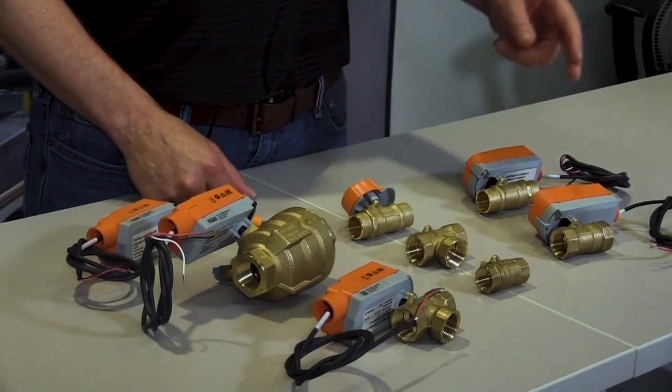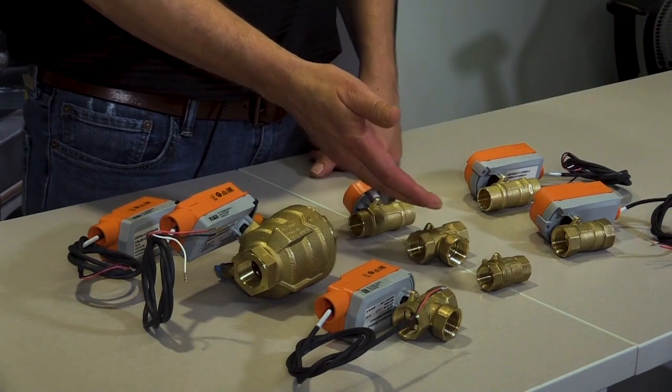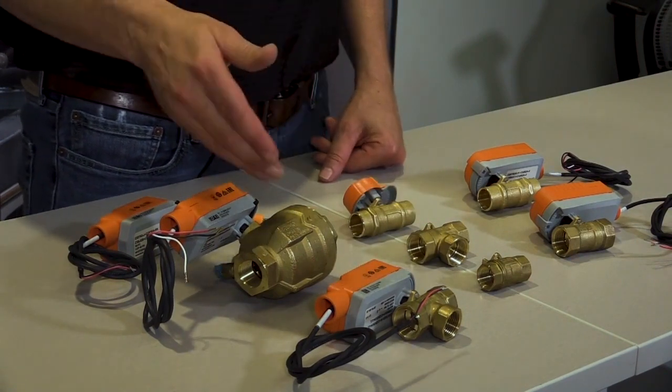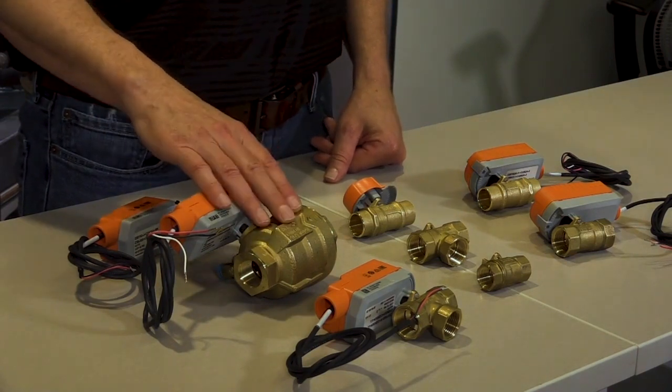I've got a couple samples here. I've got a three-quarter inch sweat, a three-quarter inch NPT, a three-quarter inch three-way valve, and the Belimo PI-QCV which is the same actuator but in a pressure-independent valve.